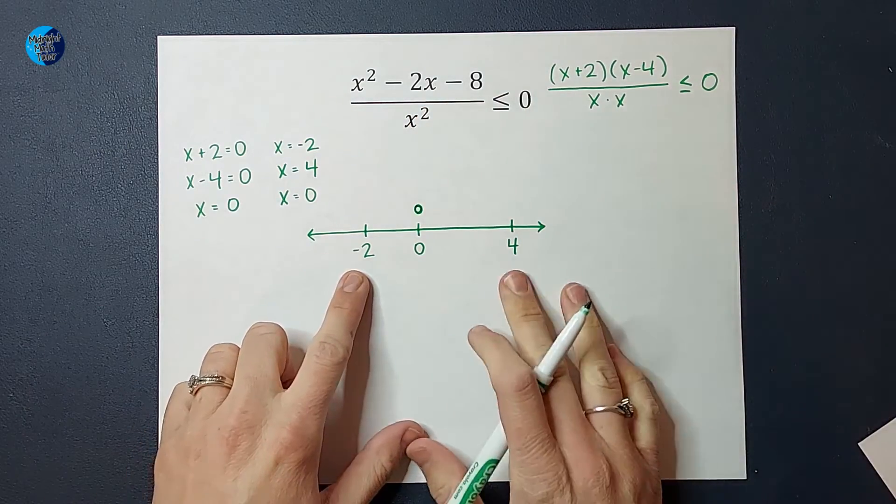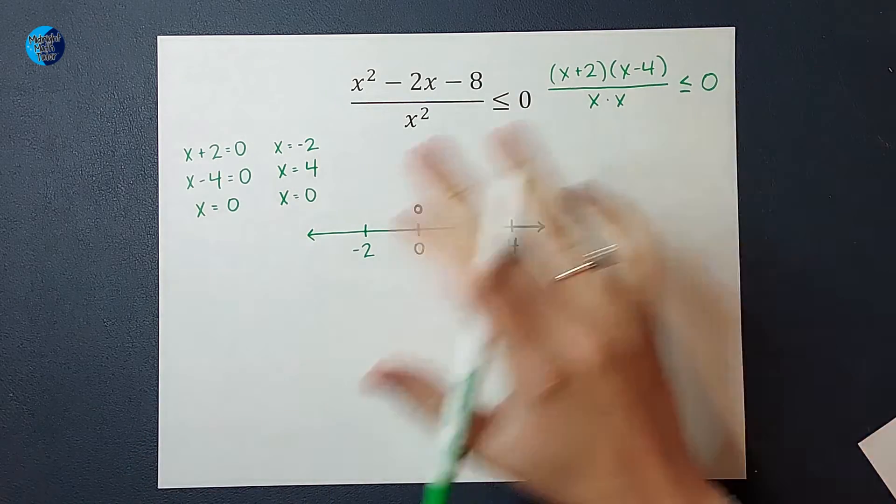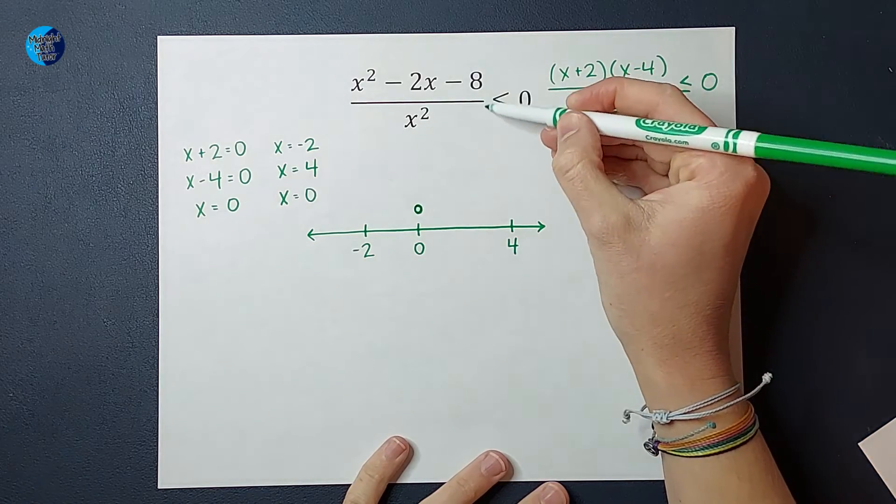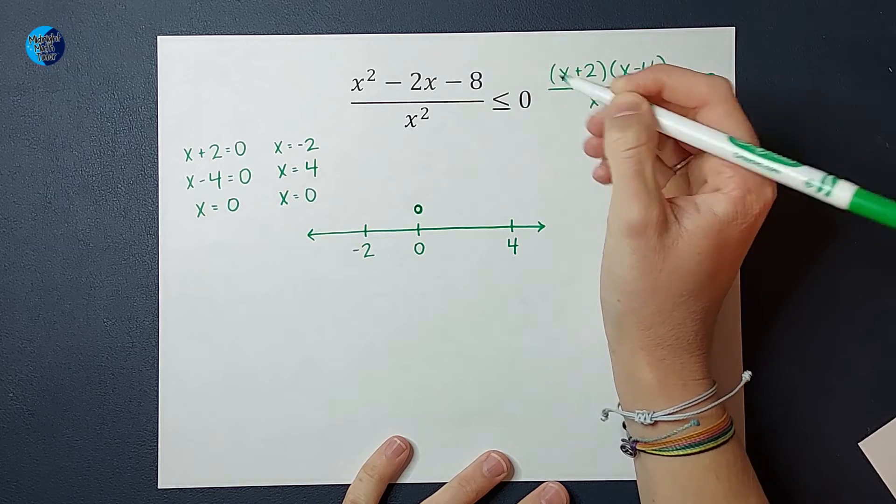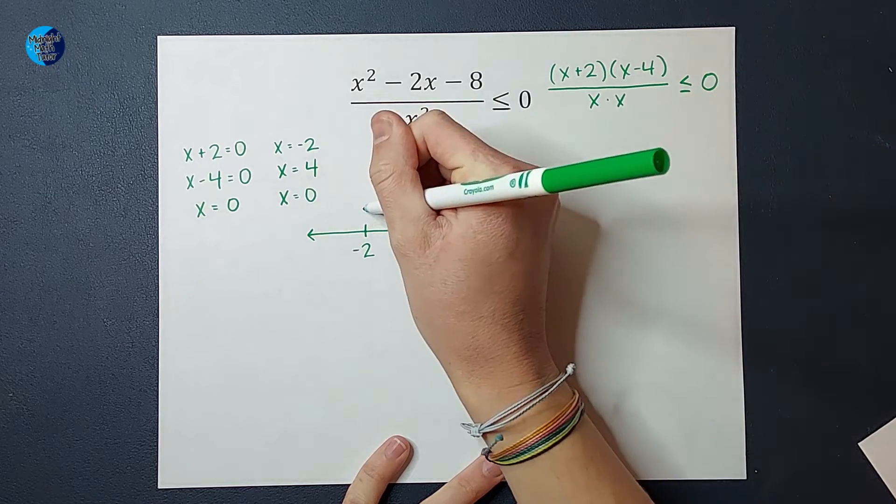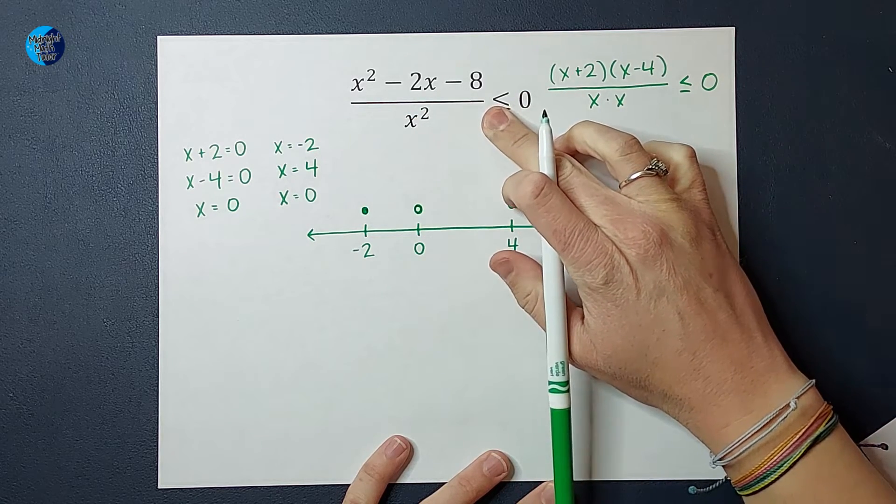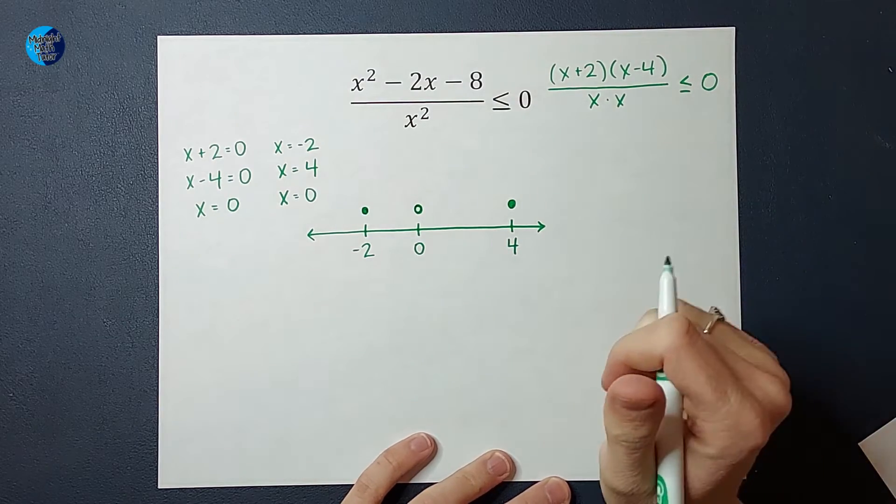But what about negative 2 and 4? If I plug in negative 2 or 4 for x, it's not going to give me a zero in the denominator. So I go ahead and look at this sign. And because it's less than or equal to, I am going to have closed circles at 4 and negative 2. If that were not there, if it were just less than, those would be open circles.